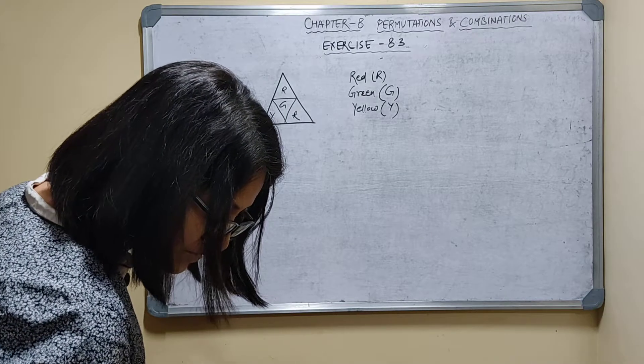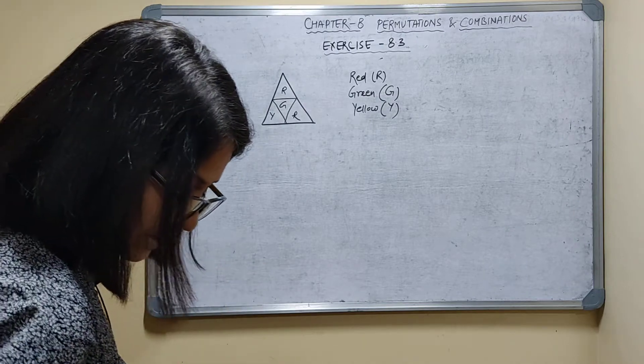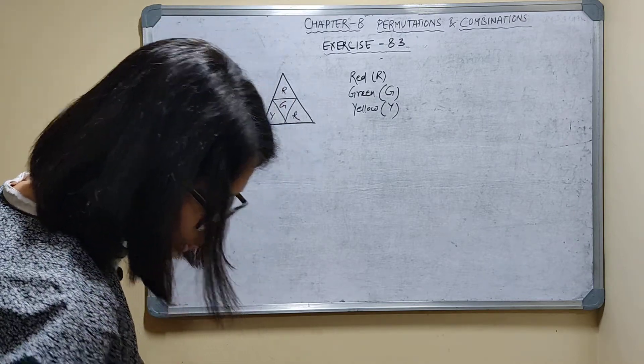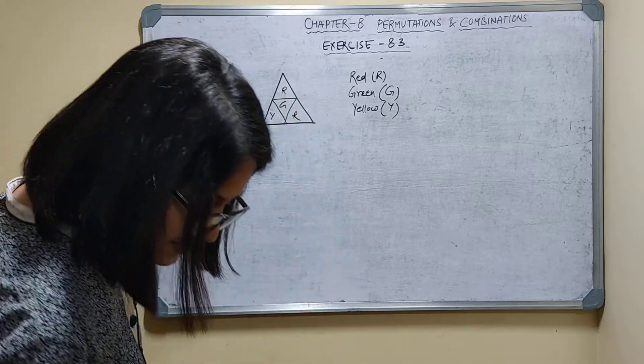Question number 11. The adjacent figure is to be colored using 3 different colors. In how many ways can this be done if no 2 adjacent triangles have the same color?